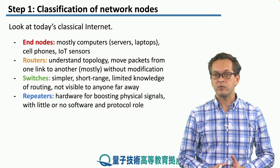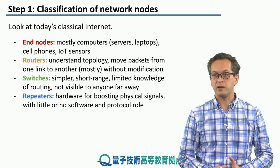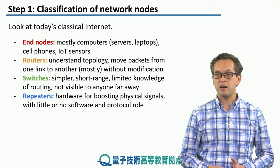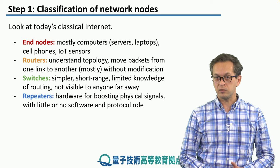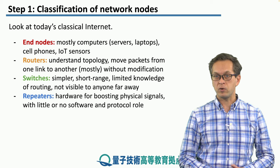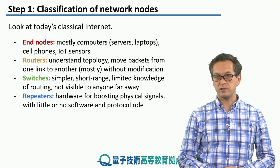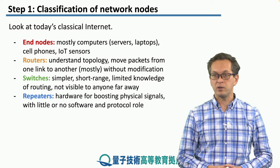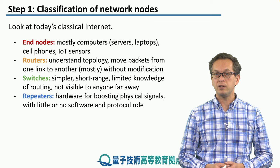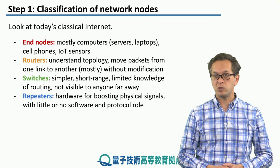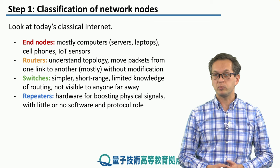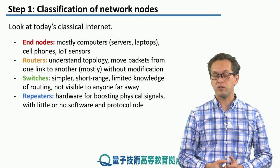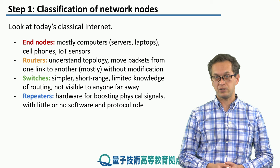Finally, we have repeaters, which we talked about previously. These are hardware nodes for boosting physical signals. As physical signals propagate in a fiber, they get attenuated, and it's the job of these repeaters to boost them to higher signal levels so that they can reach their destination.